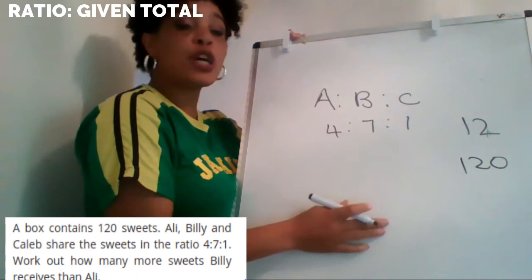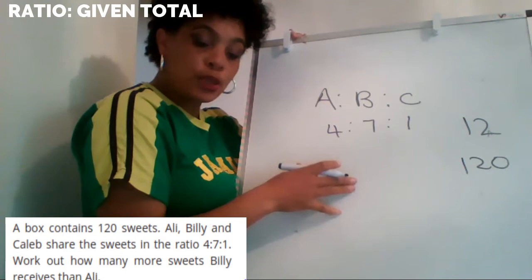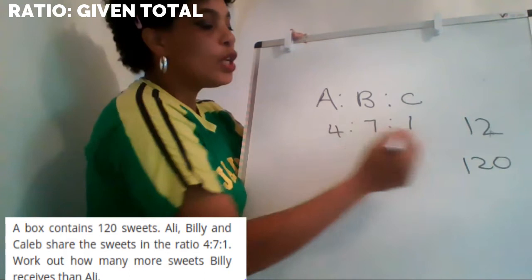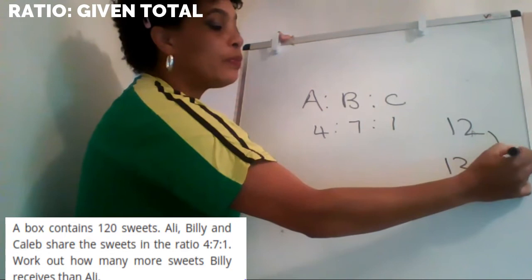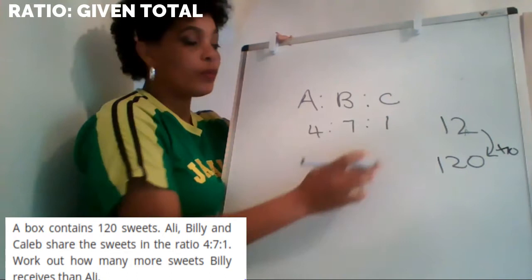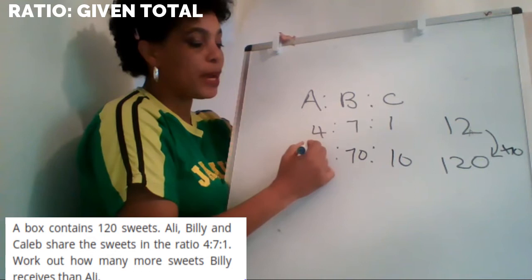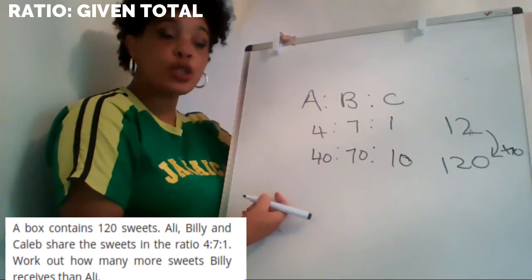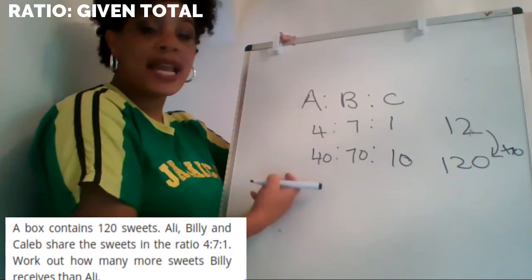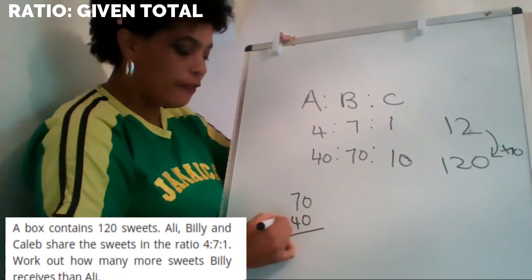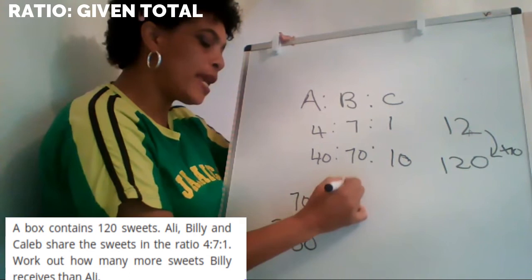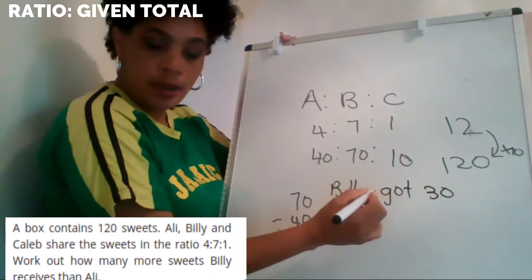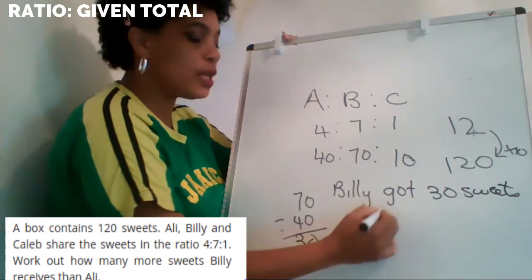The question asks: how many more sweets did Billy receive than Ali? What do I do from 12 to get to 120? Times it by 10. So four times 10 is 40, seven times 10 is 70, and one times 10 is 10. If I add all of that together I get 120. Billy got 70 and Ali got 40. If I subtract that, my answer is 30. So Billy got 30 sweets more than Ali.